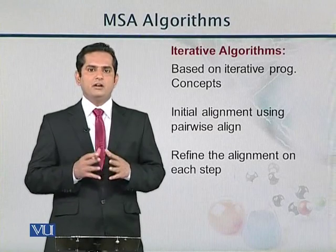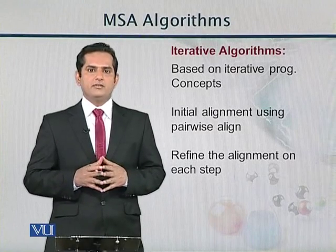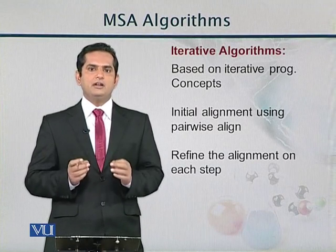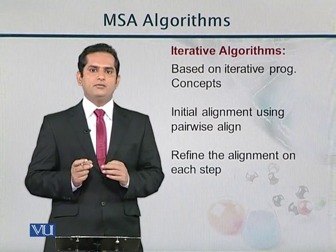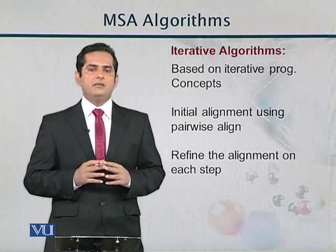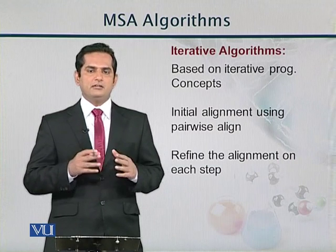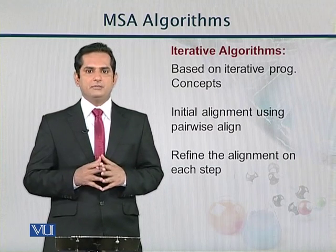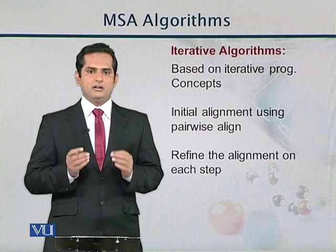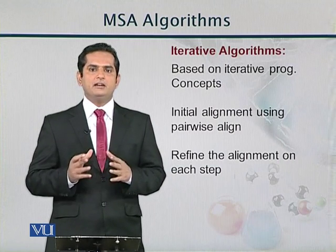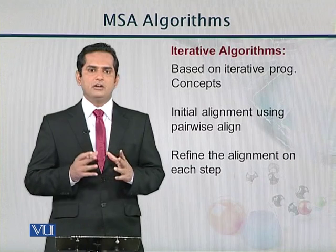The Progressive MSA technique for aligning multiple sequences had a shortcoming: we have to give an initial alignment of sequences at the first step. If that initial alignment is not correct, it is propagated in the remaining steps. To remove this shortcoming, we use iterative methods.